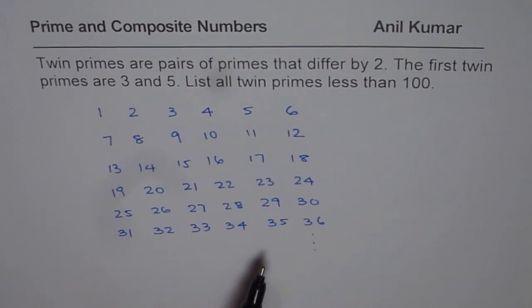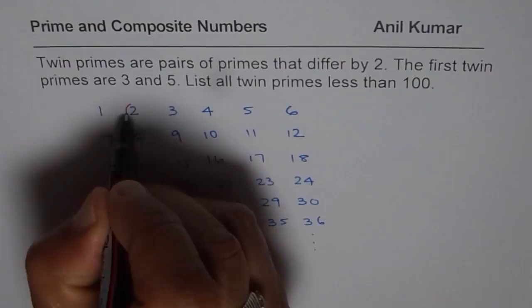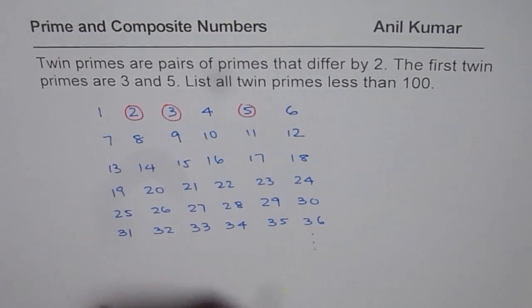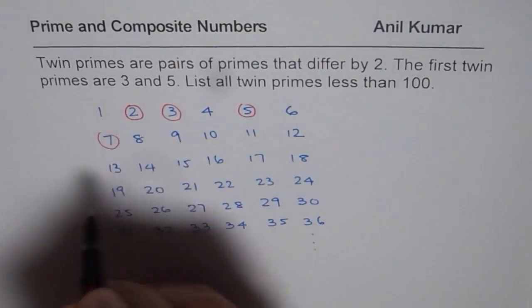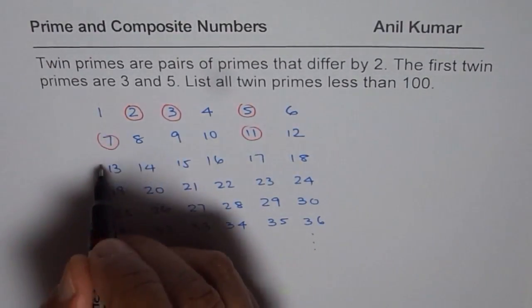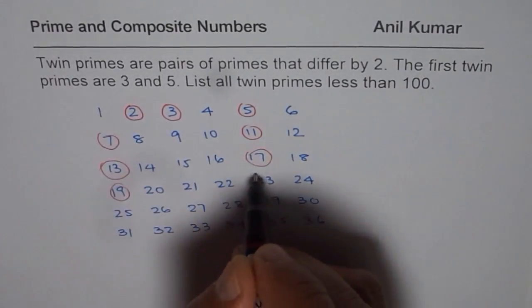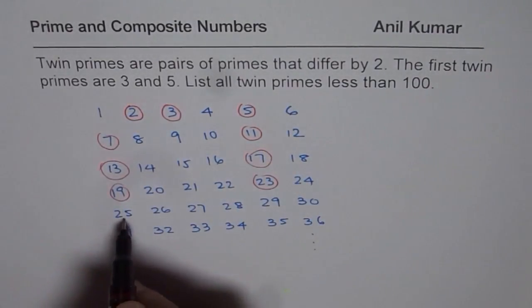Now circle the prime numbers. So you know the prime numbers are: 2 is a prime number, 3 is a prime number, 5 is a prime number. Now 7 is a prime number and in this list 11 is a prime number. We have 13 as a prime number, 17 is a prime number, 19 is a prime number, 23 is a prime number, 25 is not a prime number, however 31 is.